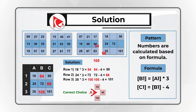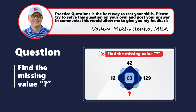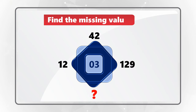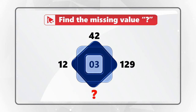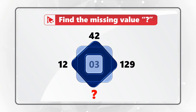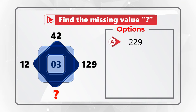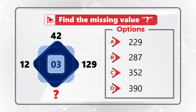Here is a practice question for you to test your skills and knowledge. I am not going to share the solution; instead, I am asking you to solve this challenge on your own and post your answer in comments so I can give you feedback. The missing value is represented by a question mark in a shape containing numbers 12, 42, 129, and a number 3 in the middle. You have four choices: A — 229; B — 287; C — 352; D — 390. Take a close look to recognize the pattern and solve this challenge.